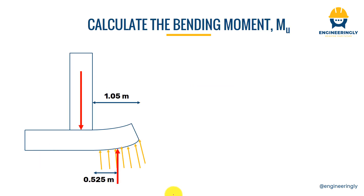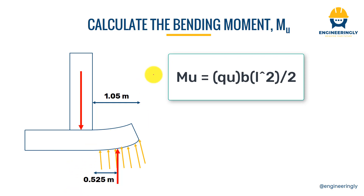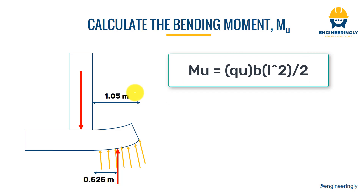As shown in the figure, the upward soil stresses tend to bend the footing. The moment is calculated at the face of the column. The formula is Mu = Qu × b × (L/2)², where L is the cantilever length from the column face to the footing edge. The resulting moment is 199 kilonewton-meters.